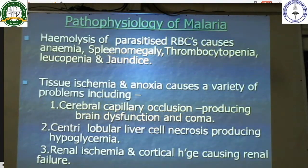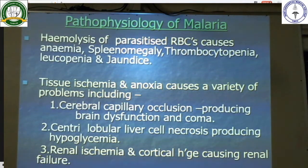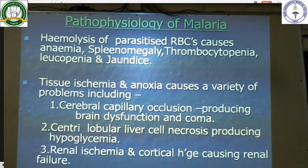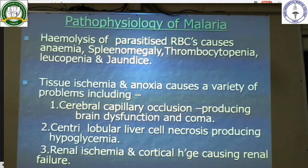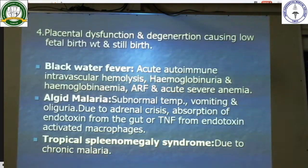The pathophysiology of malaria: hemolysis of parasitized RBCs causes anemia, splenomegaly, thrombocytopenia, leukopenia, and jaundice. Tissue ischemia and anoxia cause a variety of problems including cerebral capillary occlusion producing brain dysfunction. Centrilobular liver cell necrosis causes hypoglycemia, renal ischemia and cortical hemorrhage cause renal failure. It can also cause placental dysfunction which leads to low birth weight or still birth.